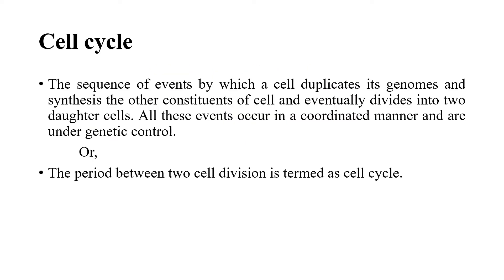So, what is cell cycle? The sequence of events by which a cell duplicates its genome and synthesizes other cell components, and eventually divides into two daughter cells — this sequence of events is what is called the cell cycle.